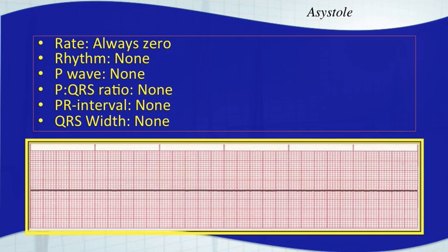PEA is a type of pulseless electrical activity. It's not really a rhythm — any rhythm can technically be considered PEA. It's when a patient has a cardiac rhythm but they don't have a pulse associated with it. That patient would be in what's called PEA, or pulseless electrical activity.